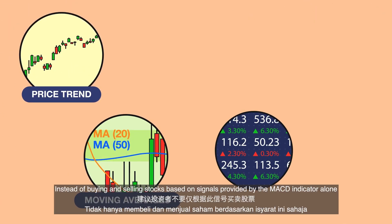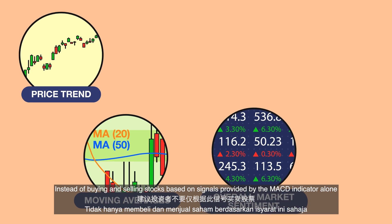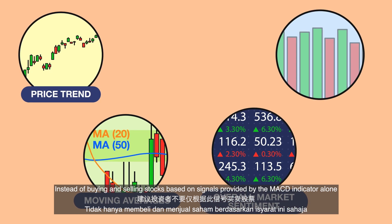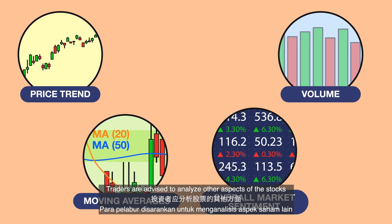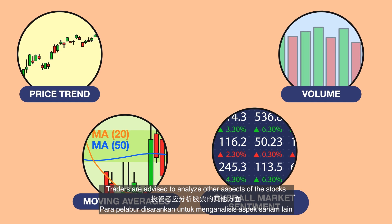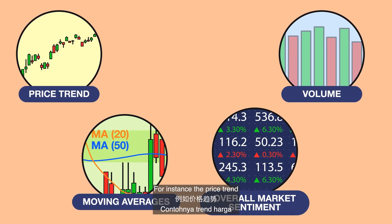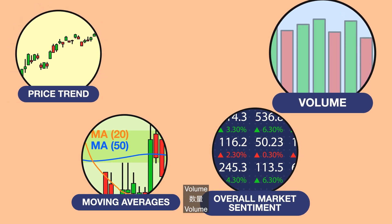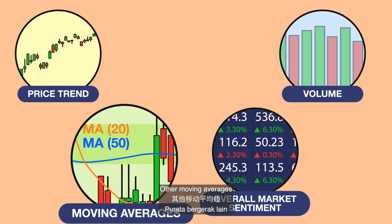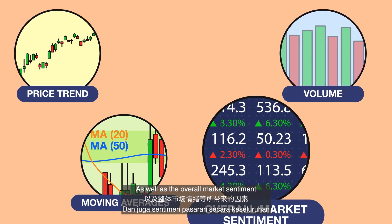Instead of buying and selling stocks based on signals provided by the MACD indicator alone, traders are advised to analyze other aspects of the stocks, for instance, the price trend, volume, other moving averages, as well as the overall market sentiment.